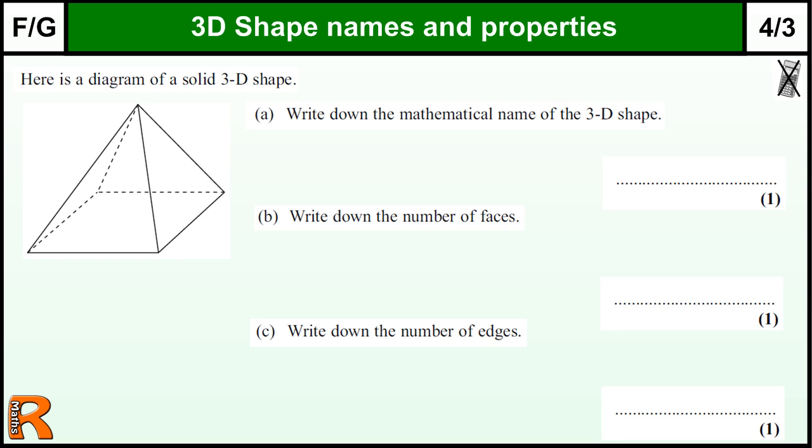Okay, here we have a question on 3D shapes, names and properties. So this shape here, it goes up to a point. You should know that this is a pyramid, because it looks like a pyramid. Again, you don't have to spell things perfectly, so long as it's clear what you're trying to write.